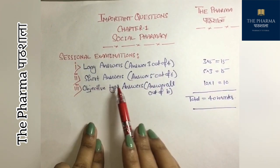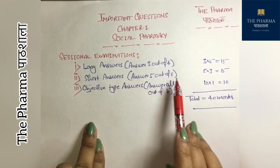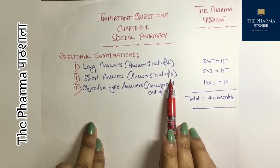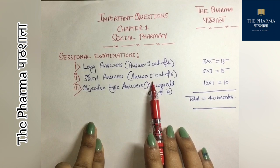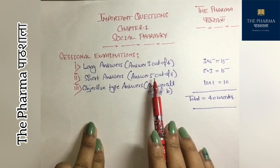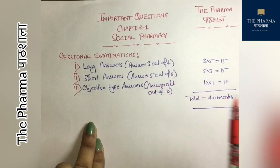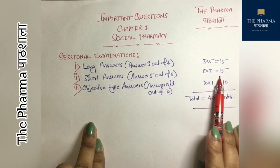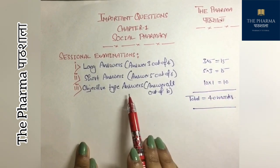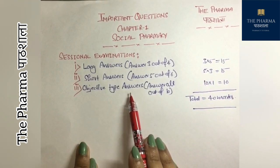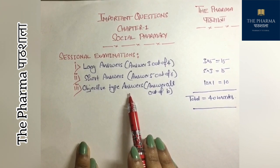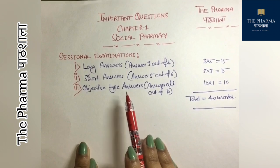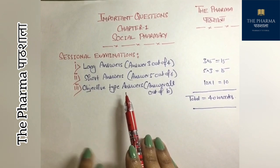Then there are short answer type questions. There are 6 questions and 5 attempts required. These questions are worth 3 marks each. If you attempt 5, you will get 15 marks. Then for objective type questions, there are multiple choice questions and fill in the blanks, as well as one-sentence answers.